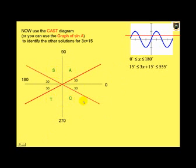So we are looking at sine and we are looking at a positive value. First we are going to look at A, that is between 0 and 90 degrees, and S, between 90 and 180 degrees. Our first solution then, 3x + 15, is equal to 30 degrees. Of course we are going to need to solve this, and we will do that in the next slide.